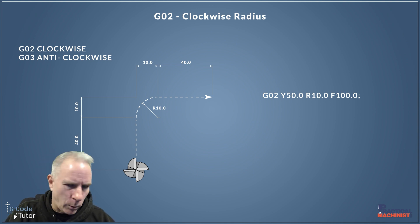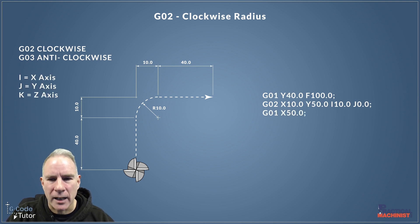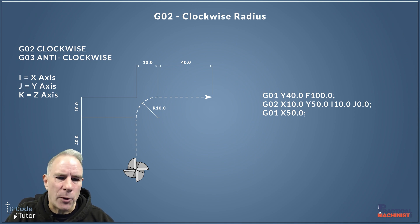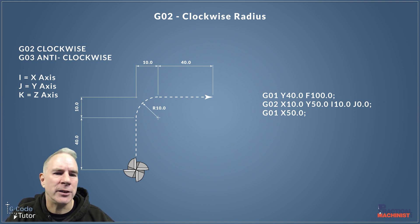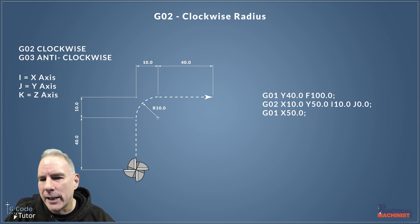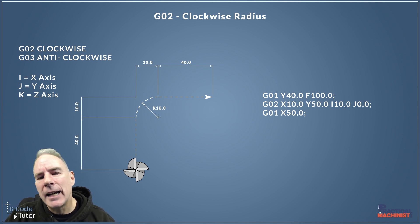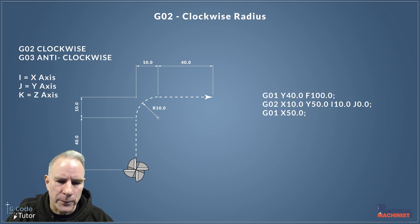We also have center point coordinates: I, J, and K. These designate the center point of a radius so we can do more complex radiuses. We can do blends and tangential blends that curve into each other, allowing us to be a lot more creative with the way we create arcs. K is on the Z axis, and we tend to use these for more complex curves and radiuses.